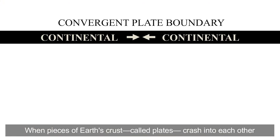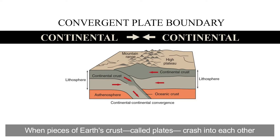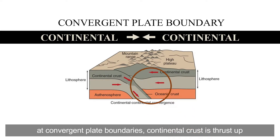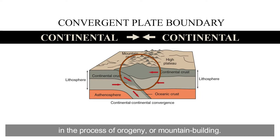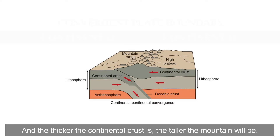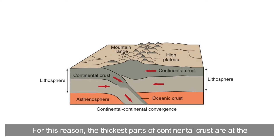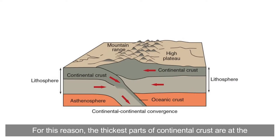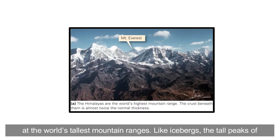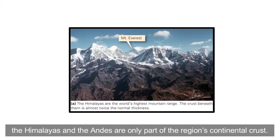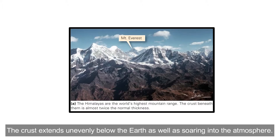When pieces of Earth's crust called plates crash into each other at convergent plate boundaries, continental crust is thrust up in the process of orogeny, or mountain building. The thicker the continental crust is, the taller the mountain will be. For this reason, the thickest parts of continental crust are at the world's tallest mountain ranges. Like icebergs, the tall peaks of the Himalayas and the Andes are only the visible part — the crust extends unevenly below the Earth as well as soaring into the atmosphere.